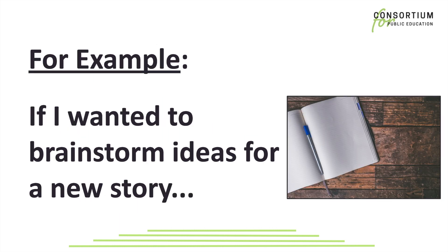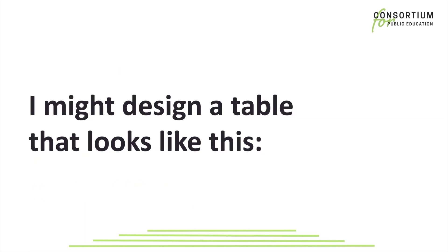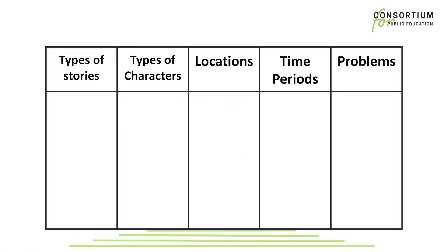For example, if I wanted to brainstorm ideas for a new story, I might design a table that looks like this, including headers like types of stories, types of characters, locations, time periods, and problems.